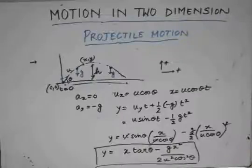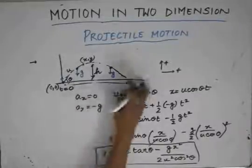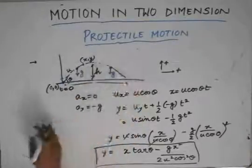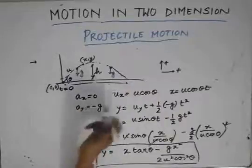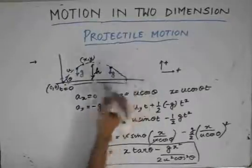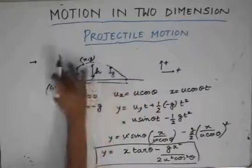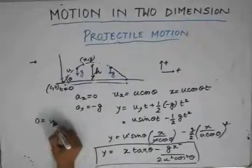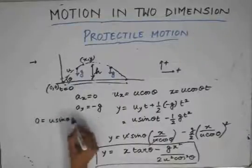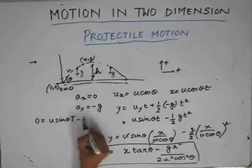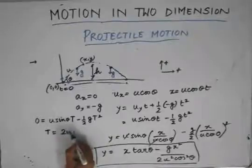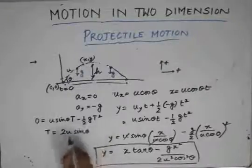Now let us find the time the particle takes to come back to the ground again, which is known as the time of flight. Considering the starting and ending positions, the displacement of the particle in the y-direction is 0. With initial velocity u sin theta, we set 0 equals u sin theta · T minus half g T squared. From this, the time of flight T equals 2u sin theta divided by g.